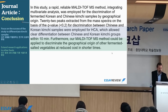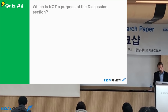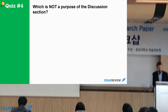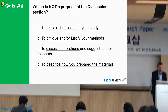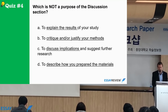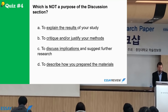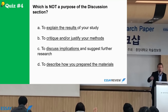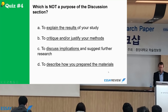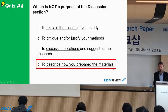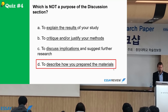Discussion quiz: which is not a purpose of the discussion section? A, to explain the results of your study; B, to critique and justify your methods; C, to discuss implications and suggest further research; D, to describe how you prepared the materials. The answer is D — you describe how you prepared the materials in the methods section, not the discussion.